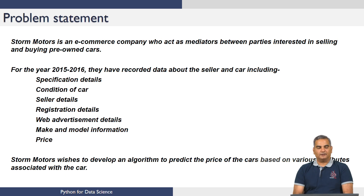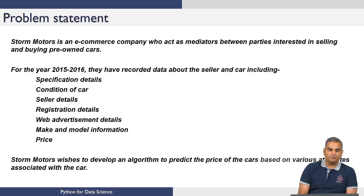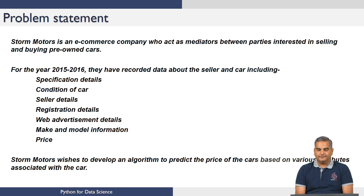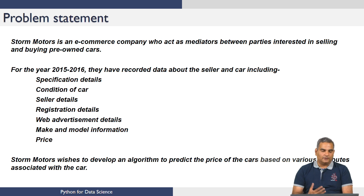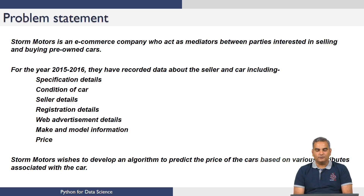The problem statement is: Storm Motors is an e-commerce company that acts as a mediator between parties interested in selling and buying pre-owned cars. They have lots of data based on sales that have happened through them or otherwise, and their interest is in making a sale quickly. If the price is appropriate — satisfying both seller and buyer — then cars move fast.